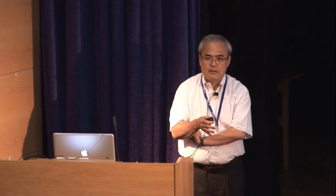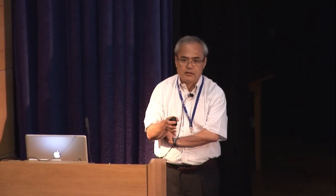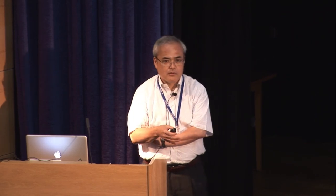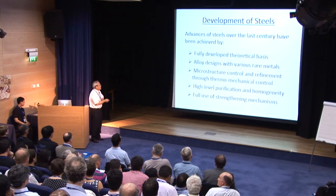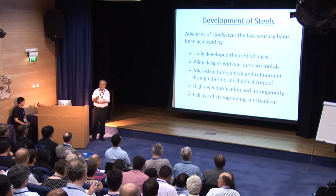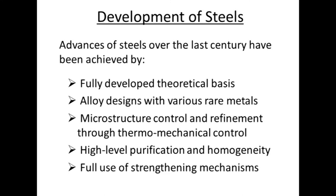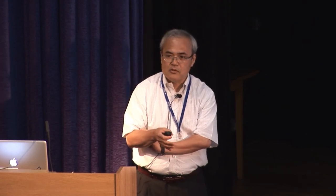All of us here know that many different kinds of steels were developed in the 20th century, and the performance and properties of steel significantly improved over that century. Those developments are certainly thanks to the theoretical basis developed in the 20th century, and also achieved by alloy design with different combinations of rare metals, by microstructure control through mechanical processes, by high purification, and by fully utilizing strengthening mechanisms.